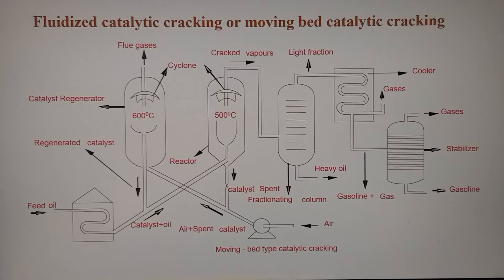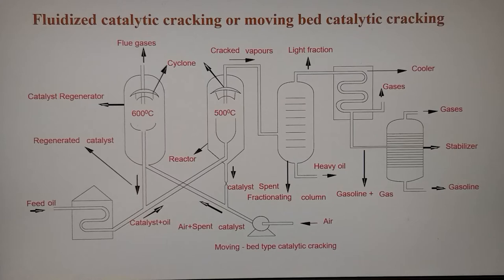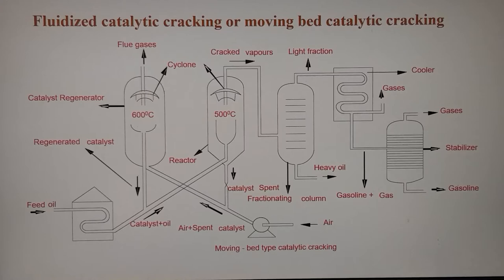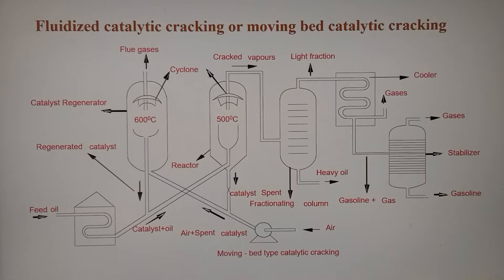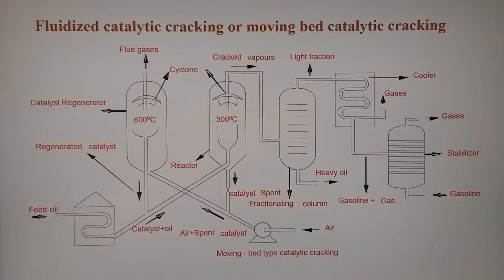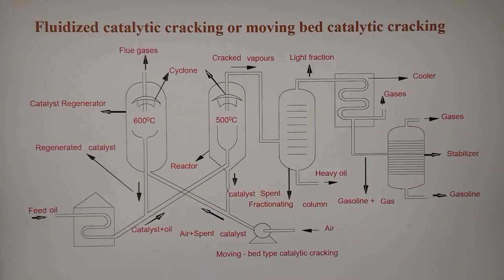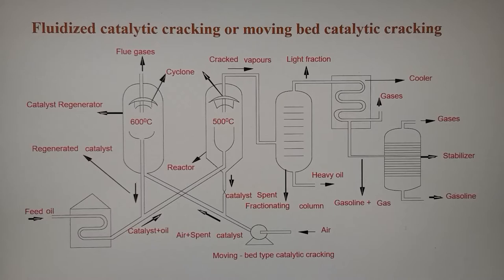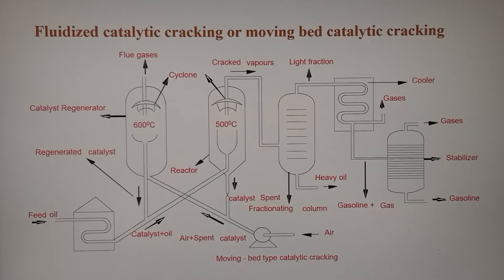The fractionating tower works on the principle of differences in boiling points. Higher boiling point liquids are left behind while lower boiling point liquids rise up in the tower. This light fraction is then taken into the cooler or condenser. The lower fractions with a high boiling point are taken out from the fractionating column as heavy oil and led back into the iron retort as feed oil. The light fraction going into the cooler is condensed and then led to a stabilizer to remove uncondensed gases.